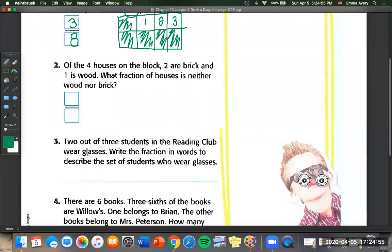Number two. Of the four houses on the block, two are brick and one is wood. What fraction of the houses is neither wood nor brick? So we need to have a diagram with four pieces. Two are brick. So I'm going to put a B for brick. And one was wood. So I'm going to put a W. And it wants to know what fraction of the houses is neither wood nor brick. So it wants to know what is this part right here. So we know our total number of pieces is four. And we have one spot left. So it's one fourth.